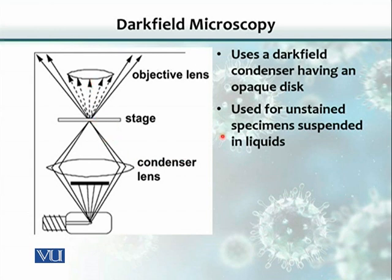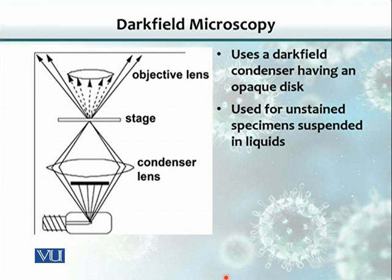The advantage of dark field microscopy is that the field, other than the organism, would appear as dark. So when the light strikes the organism, the organism would be lit — it would look white against a totally black background, which is why we call it dark field microscopy. The advantage is that we don't have to stain the cells. We can use dark field and phase contrast without staining, because staining with chemicals kills the organism. If we want to capture them alive or without disturbing their morphology, this provides a better tool.